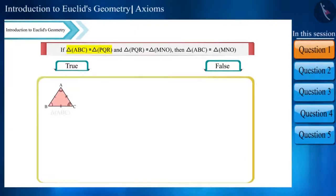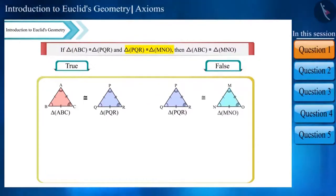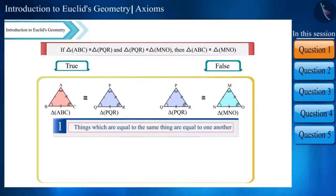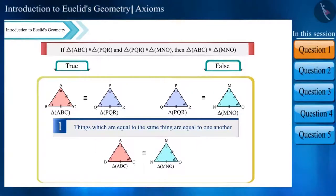In this, triangle ABC is congruent to triangle PQR, and triangle PQR is equal to triangle MNO. According to Euclid's first axiom, things which are equal to the same thing are equal to one another. Hence, triangle ABC will be congruent to triangle MNO, and the statement is true.